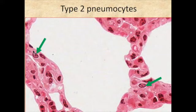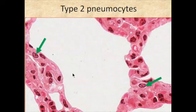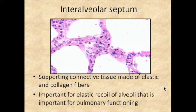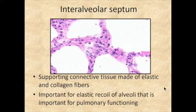Here you can see a couple of type 2 pneumocytes pointed out. A type 2 pneumocyte is sometimes easier to find if it has a nucleolus in the nucleus. The septa between the alveolar spaces are going to have not only collagen fibers, but also elastic fibers and reticular fibers. The elastic fibers are very important for the recoil that occurs in the alveolar spaces and for pulmonary functioning — this becomes apparent when talking about conditions like emphysema.